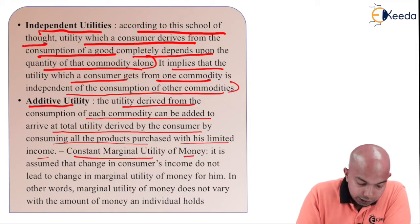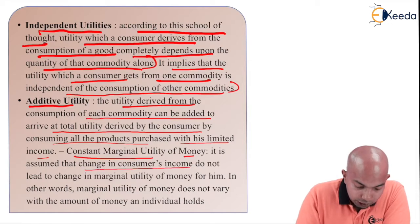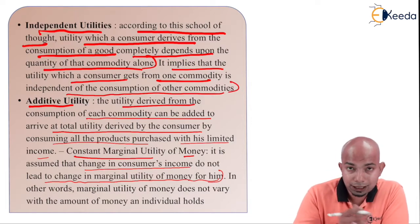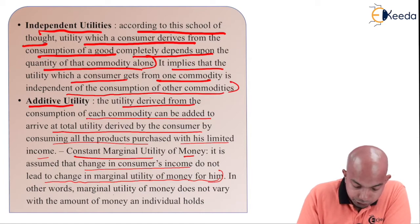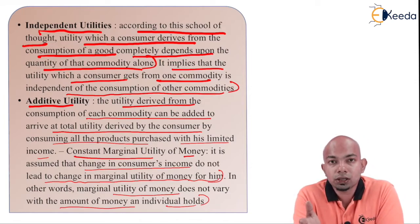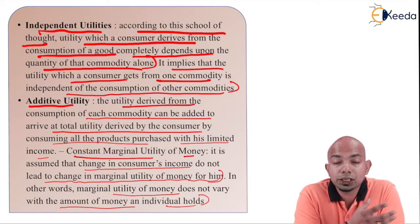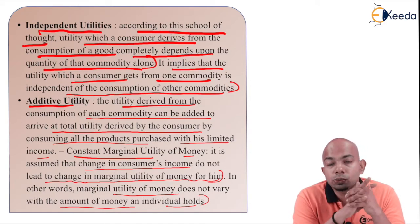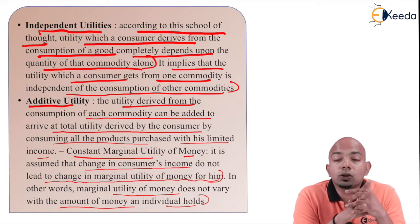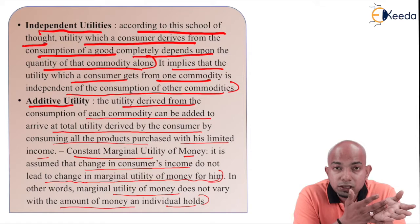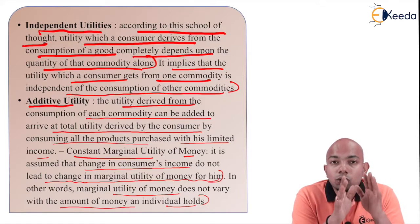The next assumption is constant marginal utility of money. It is assumed that changes in a consumer's income do not lead to a change in the marginal utility of money for him. In other words, marginal utility of money does not vary with the amount of money an individual holds. Whether I have 10,000 rupees or 1,000 rupees, if a pack of cigarettes costs around 300 to 400 rupees, I can purchase it with either amount — hence the marginal utility of money holds constant here.